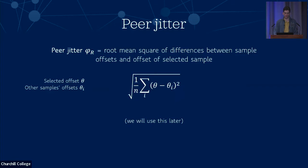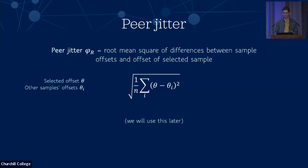One other thing we need to calculate at this stage is called peer jitter, which is basically a measure of the variation between samples from the same server. We calculate that as the root mean square of differences between the selected offset and all the other offsets in the shift register — a measure of how spread out different samples to the same server are. We need to calculate this here because we need all the samples from the server available, and we'll come back to this later.